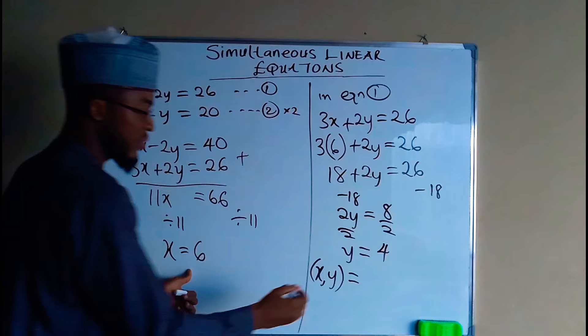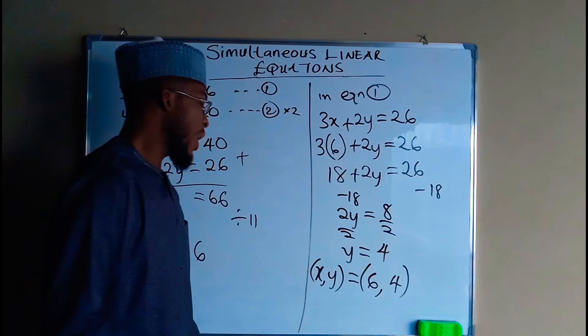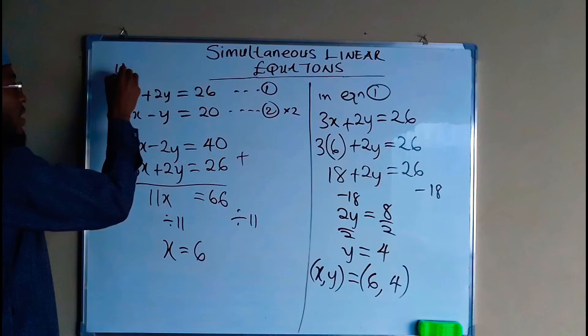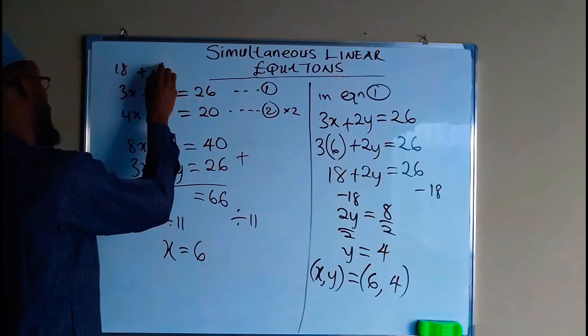Now let's test these values into the main equations. When x is 6, we are going to have 6 times 3 which is 18, and if y is equal to 4 we are going to have 8.